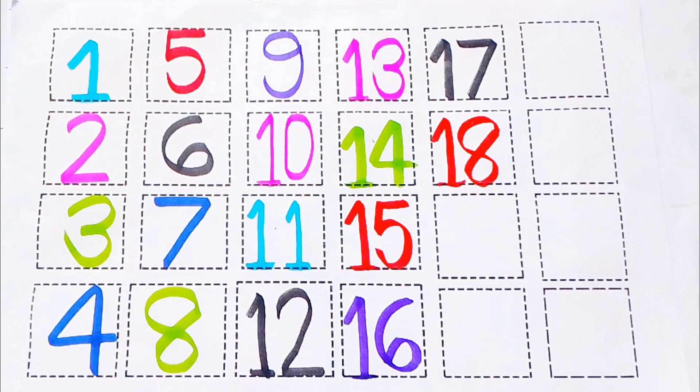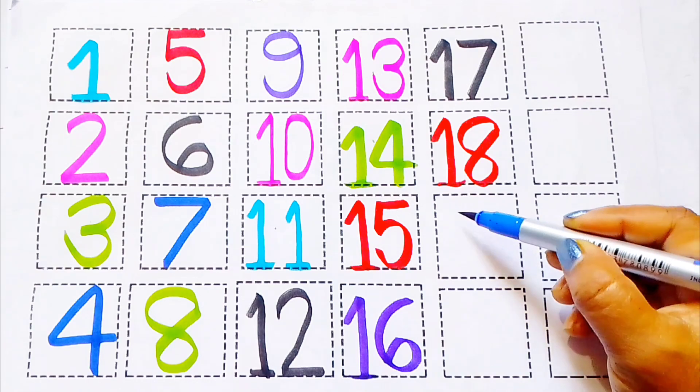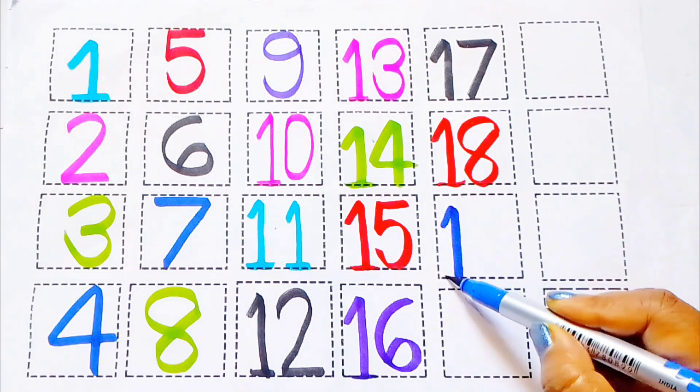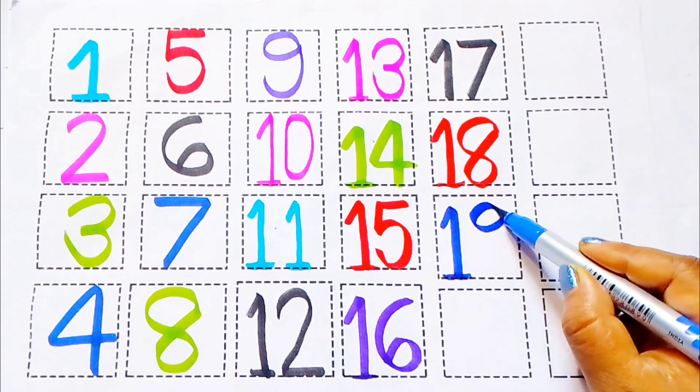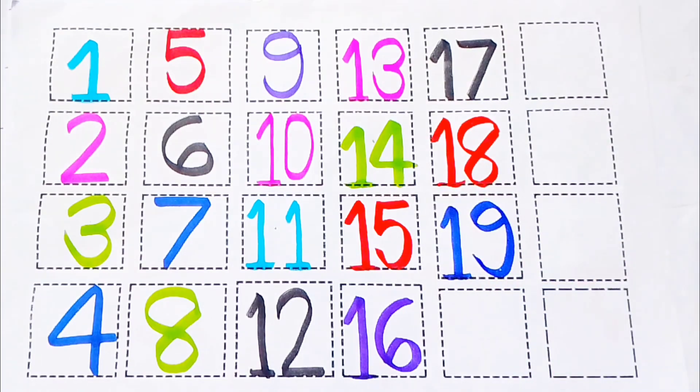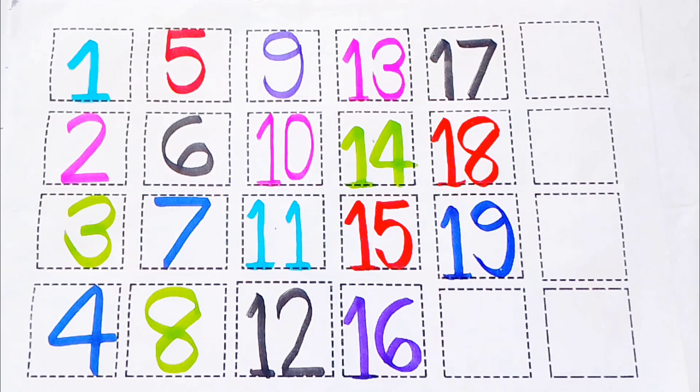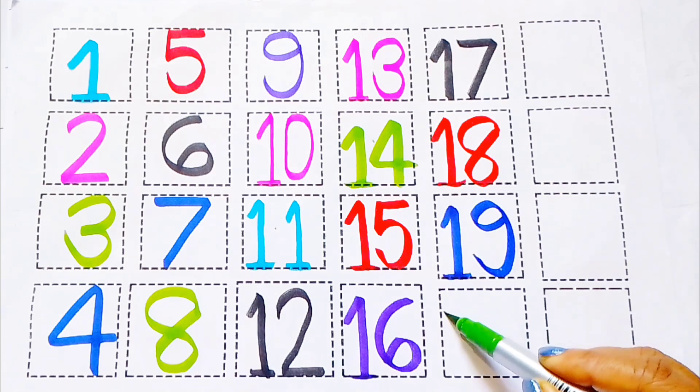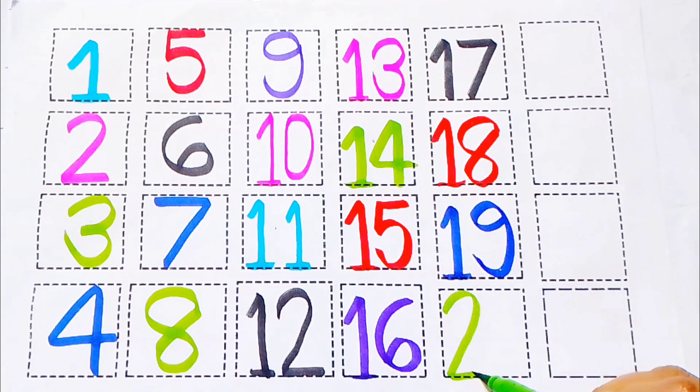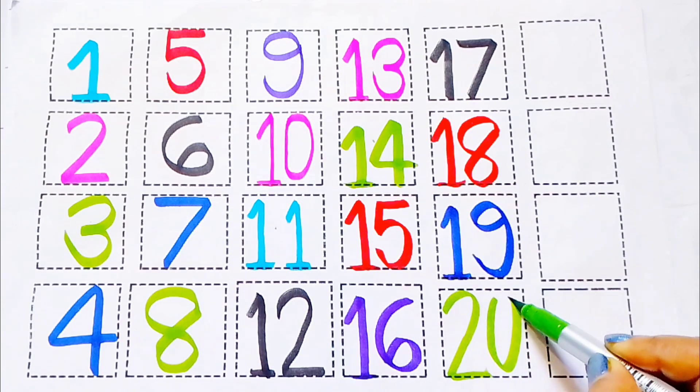Nineteen. Blue color. N, I, N, E, nine, T, W, N, nineteen. Twenty. Twenty. Green color. T, W, E, N, T, Y, twenty.